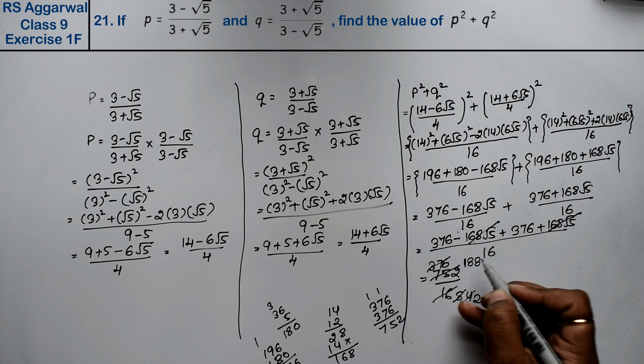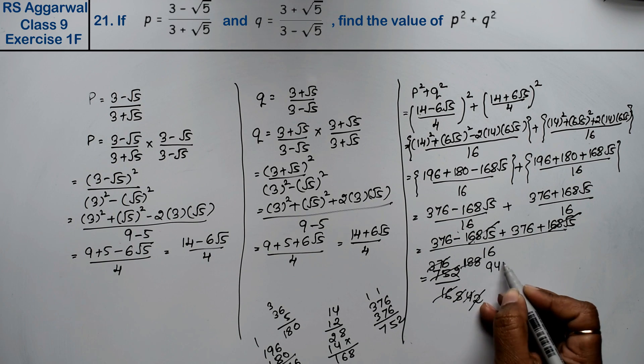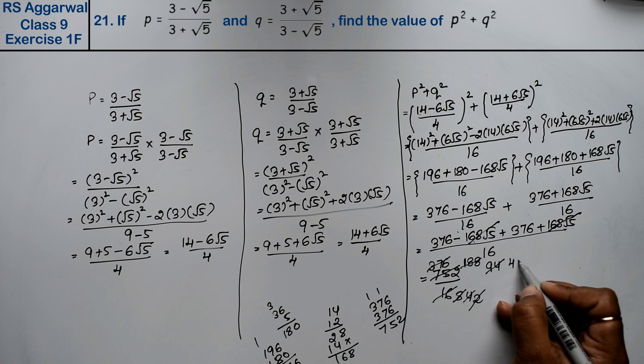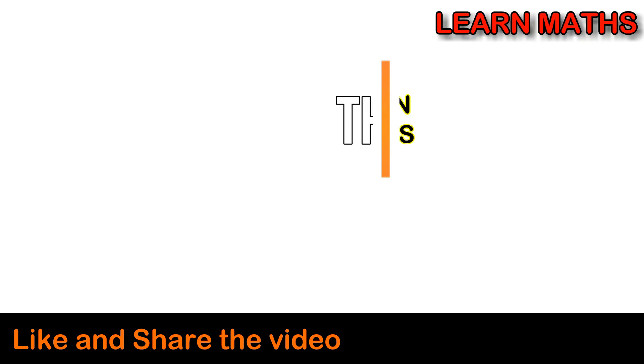Again dividing by 2: 2 twos are 4, 2 nines are 18, 2 fours are 8. Again dividing by 2: 2 ones are 2, 2 fours are 8, 2 sevens are 14. That means 47 is the answer. Thank you.